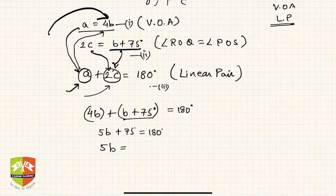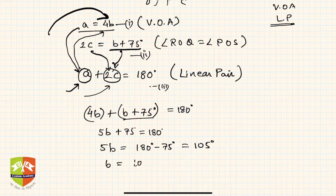So what will the value of b be then? b is 105 degrees by 5, which is 21 degrees. This method is called substitution method of solving systems of linear equations. So b is 21 degrees.